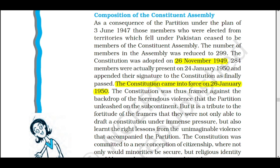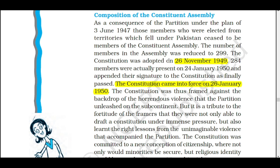In 1946 there was the first meeting on 9th of December. But what happened after that? In 1947 there was the partition. So some of the members who were Constituent Assembly members of India had to shift to Pakistan. This had an impact on the numbers of the Constituent Assembly of India — the number of members was reduced to 299.